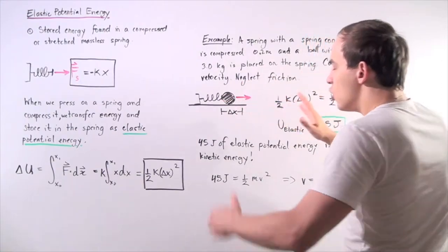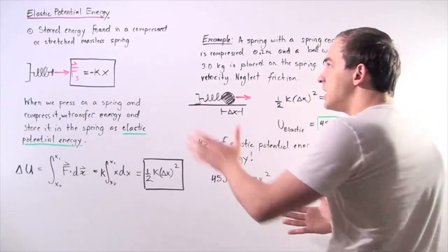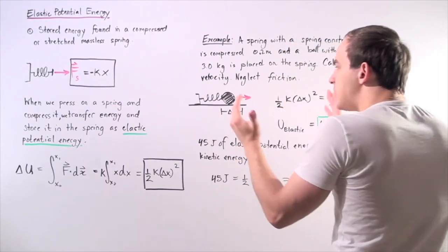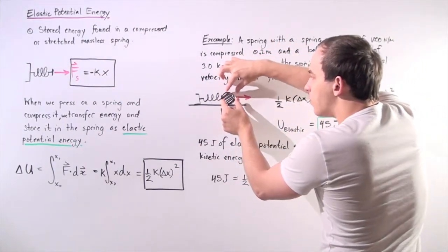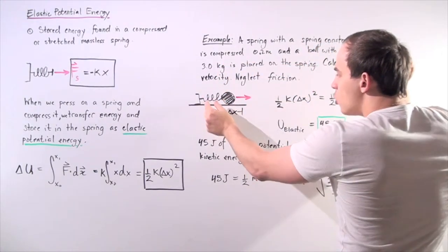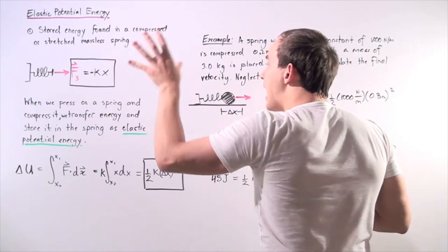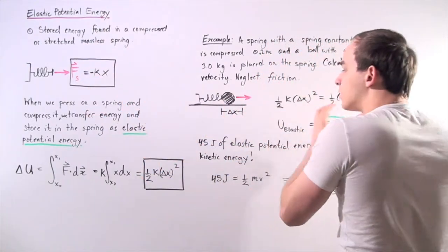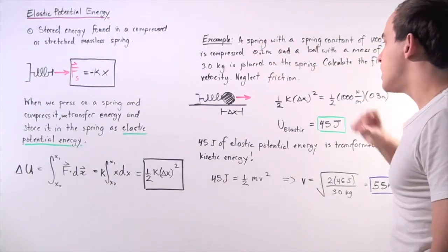Here we have a spring. We compress the spring and store some amount of elastic potential energy in that spring. Then we take a ball, place the ball onto the end of the spring, and let go. The elastic potential energy will transform into kinetic energy of the moving object.